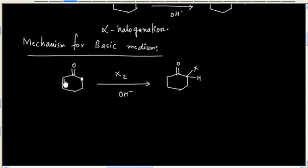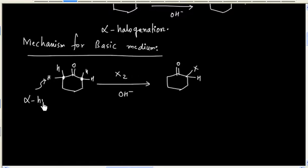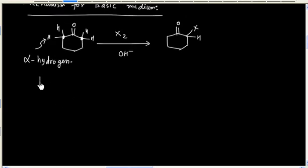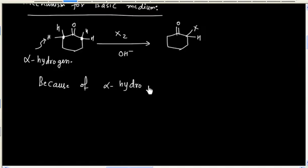This carbon is called the alpha-carbon, and the corresponding hydrogen is called the alpha-hydrogen. These hydrogens are alpha-hydrogens. This reaction occurs because alpha-hydrogen is acidic in nature — so the reaction occurs because of the acidity of the alpha-hydrogen.